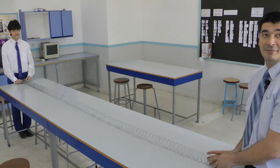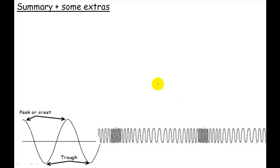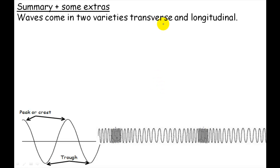That's a take. Okay, so let's summarize. Waves come in two varieties. Transverse, which would be like this one, and longitudinal, like this one.